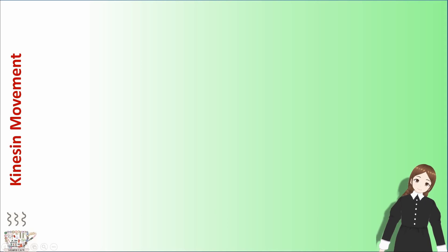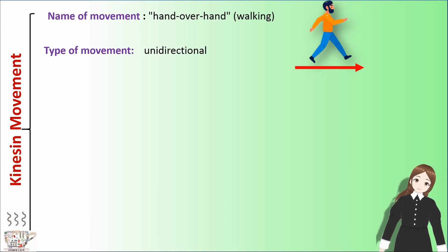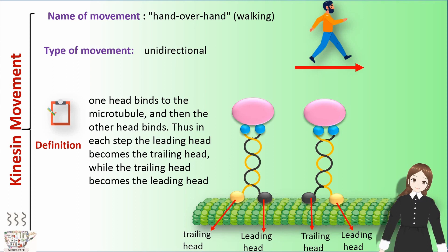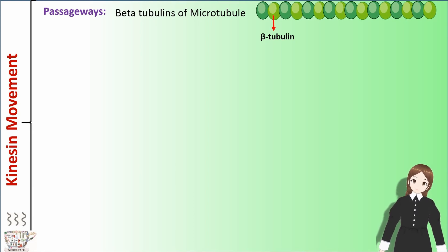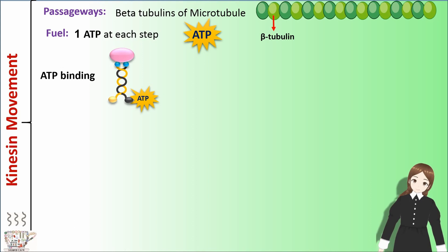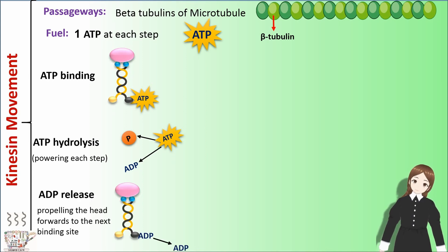Kinesin movement. The name of the movement is hand-over-hand, or walking. The type of movement is unidirectional. One head binds to the microtubule and then the other head binds. Thus, in each step, the leading head becomes the trailing head, while the trailing head becomes the leading head. Passage points are beta-tubulins of the microtubule. The fuel is one ATP at each step — ATP binding, ATP hydrolysis that powers each step, and ADP release that propels the head forward to the next binding site.